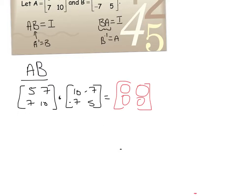To get my first entry, I'm going to take row 1 and column 1. If you need help with the multiplication, go back to those videos. What happens here is I get 5 times 10, which is 50, plus negative 49, and that gives me 1. Now for row 2, column 1 — that gives me this spot right here. 7 times 10 is 70, plus 10 times negative 7. Add them together and I get 0.